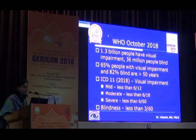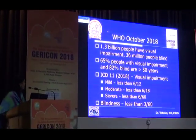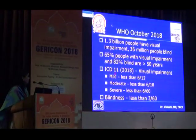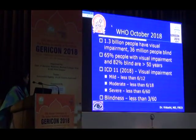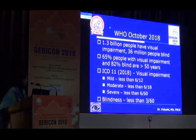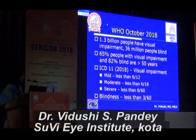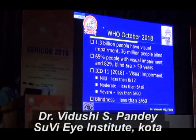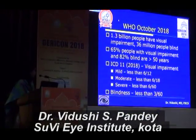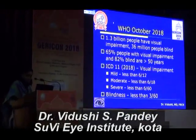But we also need to know the definition — what do we mean when we talk about somebody being blind? The WHO has adopted the ICD classifications for a long time, and currently it is ICD-11 of 2018. These are the definitions of mild, moderate, and severe visual impairment. Blindness as per WHO is any visual acuity of less than 3/60 in the better eye.